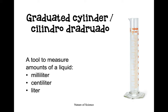Next, we'll discuss tools that are used to measure volume. Volume is the amount of liquid in an object. We can find this using a graduated cylinder. I remember it's called a graduated cylinder because if you flip it all the way over, it looks like it's wearing a graduation hat. When we measure the volume of liquids, we can use three units: milliliters, centiliters, or liters. The smallest is the milliliter, the second smallest is a centiliter, and the largest is a liter.